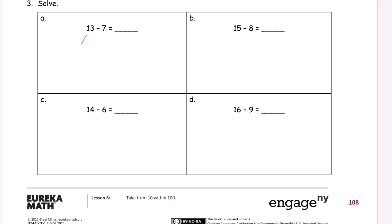13 minus 7. We're taking out 10. There's going to be 3 left. 10 minus 7 is 3 and then we just add the 3's. This 3 and that 3 are the ones we're adding.